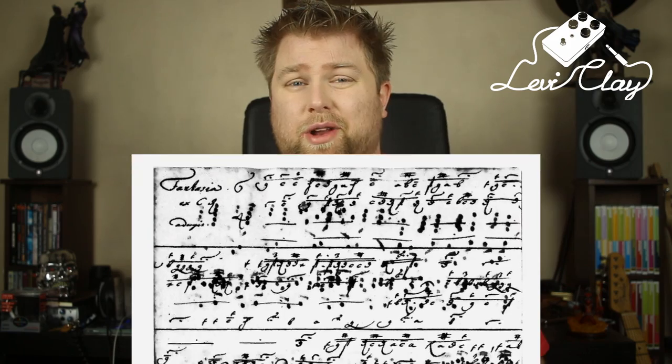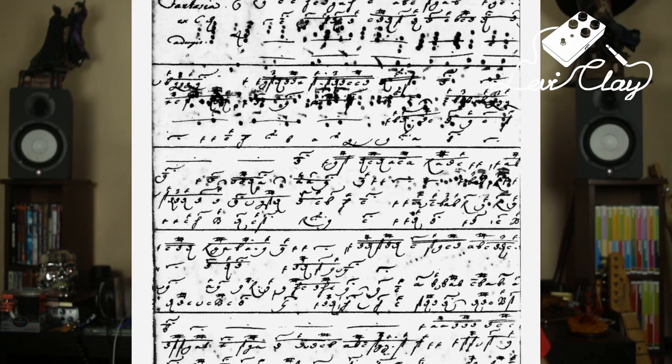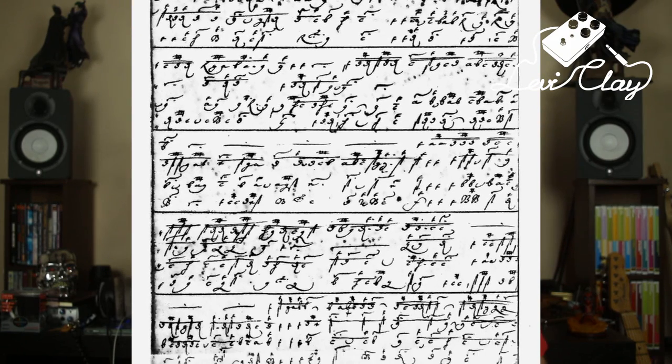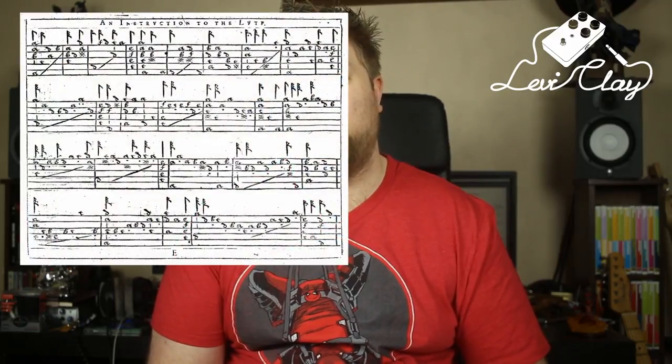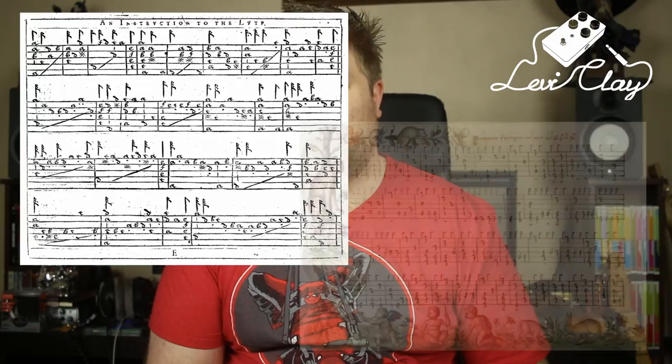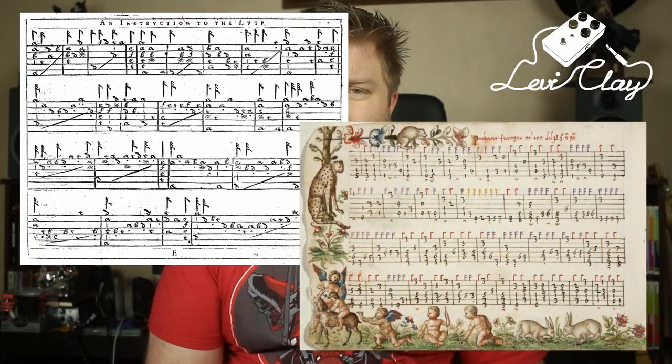Tablature was the original way to notate stringed instruments — the lute, for example. There's also tablature for organ music. I'm looking at it and I have no idea what this means, but to somebody back in the day this was a shorthand form of writing music for the organ — bizarre. Let me cut in a couple more examples so you can see what tablature that's hundreds of years old would look like. This is old, old, old music.